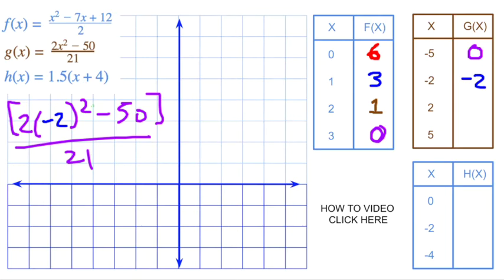What about when we equal positive 2? All right, when x here is positive 2, we get the same thing. All right, 2 times 2 is 4 times 2 is 8 minus 50 is negative 42.